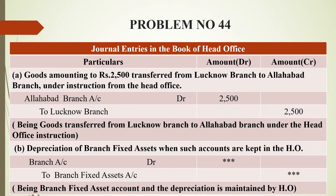The first entry is: goods amounting to rupees 2,500 transferred from Lucknow branch to Allahabad branch under instruction from the head office. Here we will see goods on a branch called inter-branch transaction — we will see the link in the description box for the theory part. So we will see the goods transferred from Lucknow branch to Allahabad branch, amounting to rupees 2,500, under head office instruction.